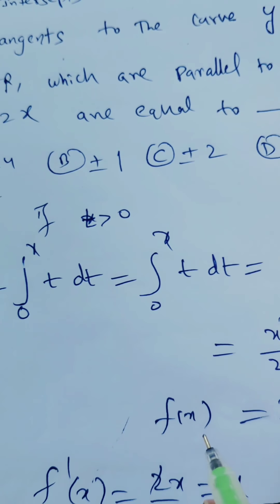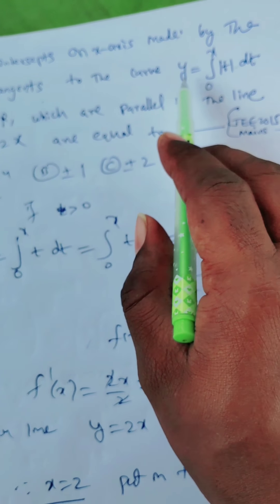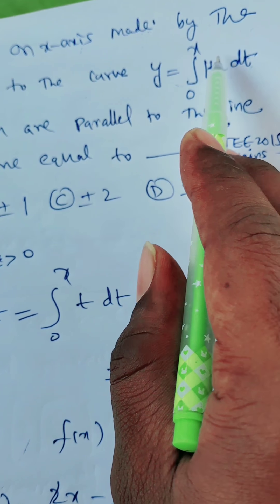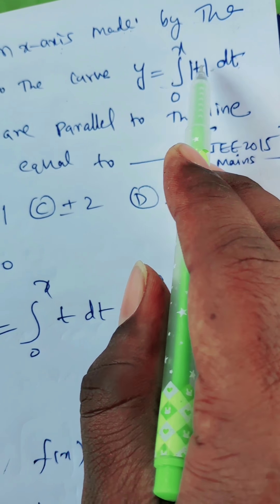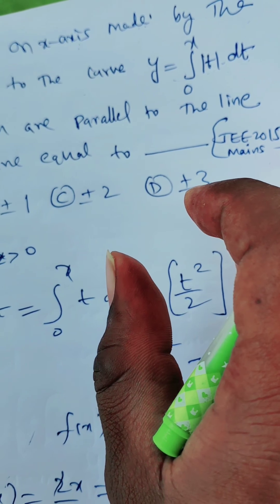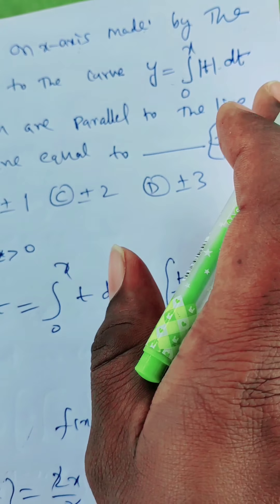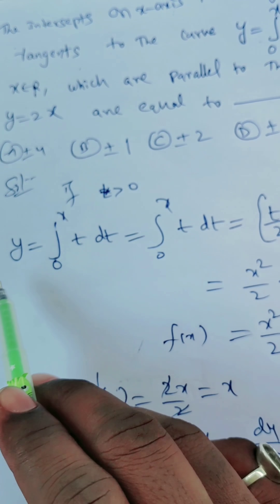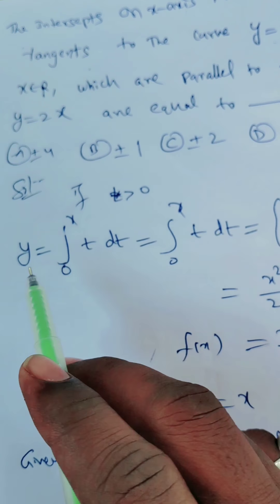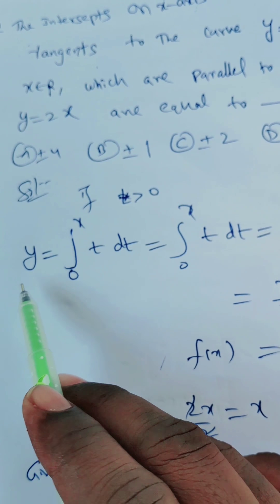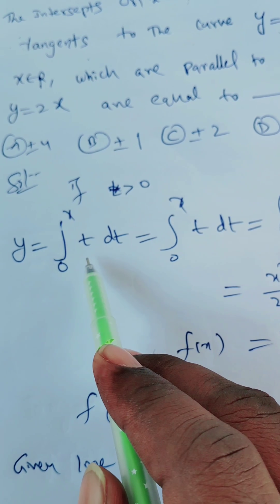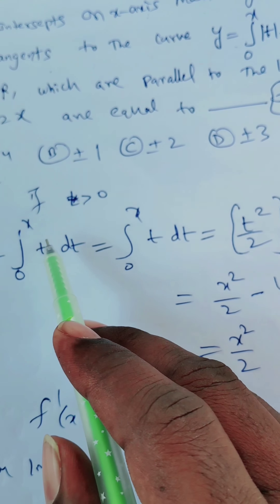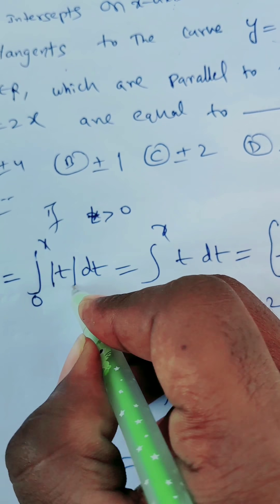So for this function, y equals the integration from 0 to x of mod t dt. Since we have mod t, we need to take two cases: t greater than 0 and t less than 0. If t is greater than 0, then mod t is simply t, so y equals the integration from 0 to x of t dt.